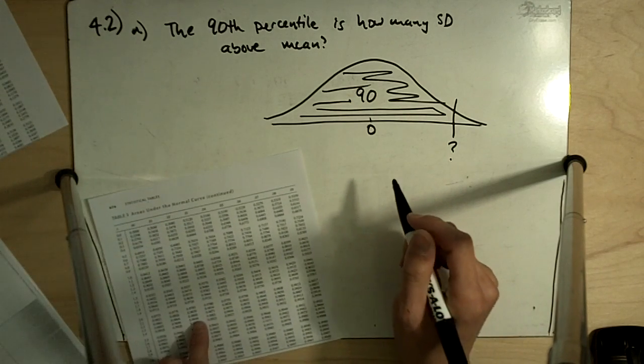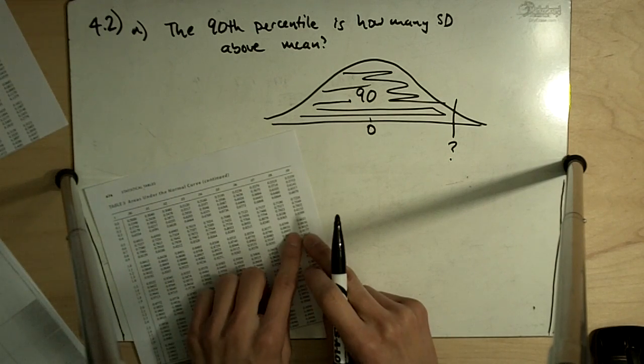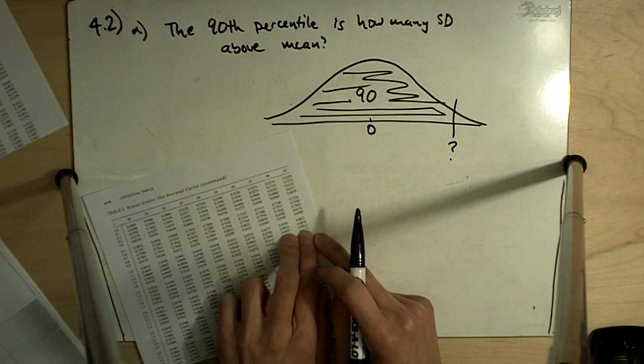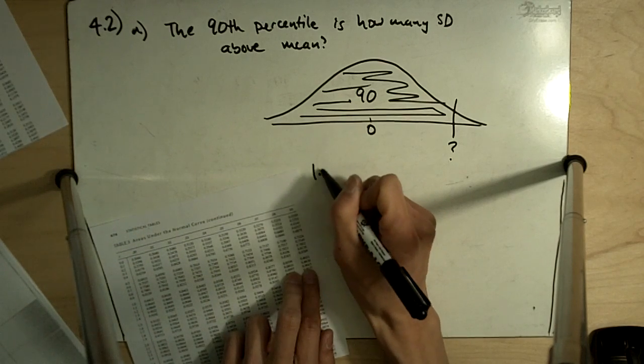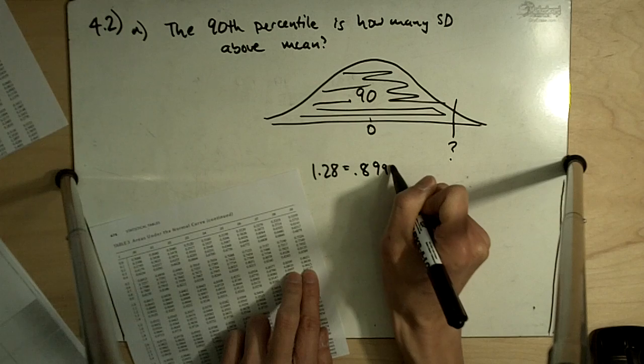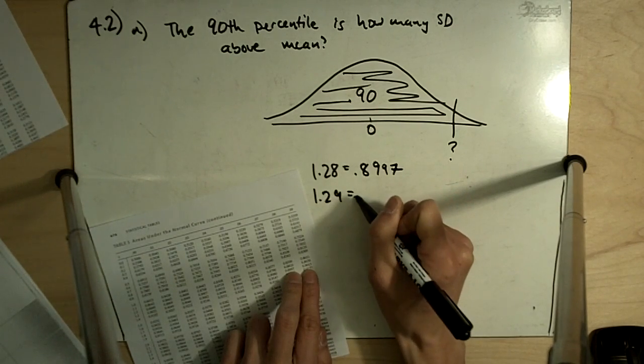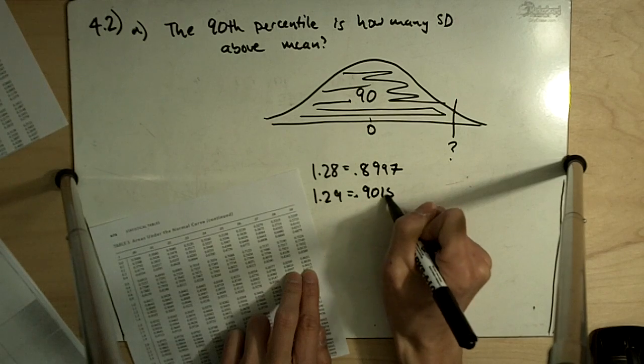So in our table, I am looking for the value of 0.900. The closest I can find, I have 1.28, which is equal to 0.8997, and I have 1.29, which is equal to 0.9015.